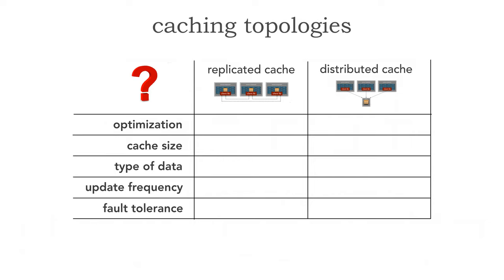Let me give some guidelines on whether to choose replicated or distributed caching, applicable to microservices or any distributed architecture. The first criterion is optimization — what's most important to you: performance or data consistency? Replicated caching will always be faster because the data is in memory, giving microsecond-level retrieval. A distributed cache requires a remote access protocol, so it's slower — but consistency will always be better in a distributed cache. So which is more important to you — performance or consistency?